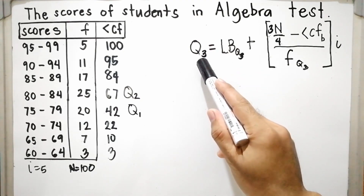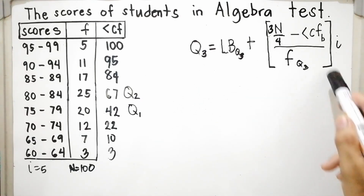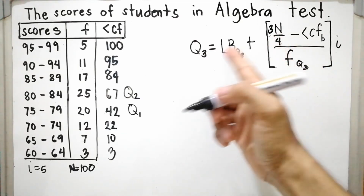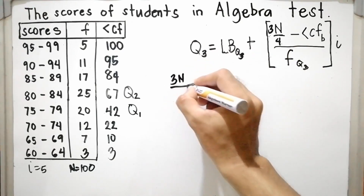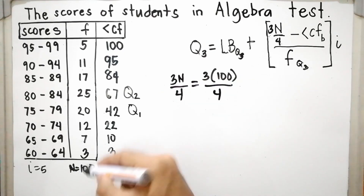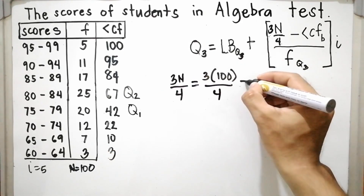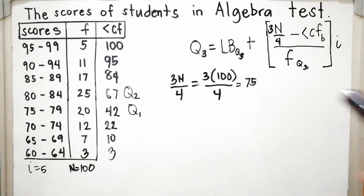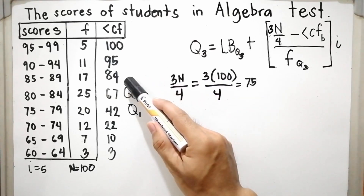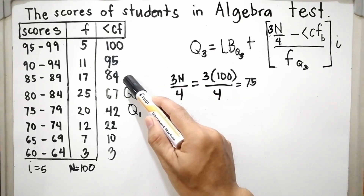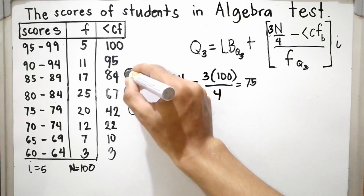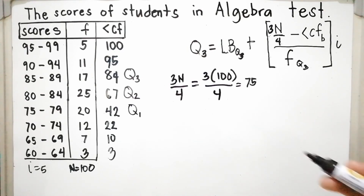Now let us calculate the third quartile, Q sub 3. The only difference is the location formula: 3N over 4. So 3 times 100 over 4 equals 75. Locate 75 in the cumulative frequency column. Since 67 is less than 75, it is located at 84. So the Q3 class is 85 to 89, and the frequency is 17. Q sub 3 is also known as the upper quartile.